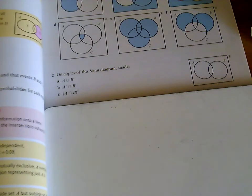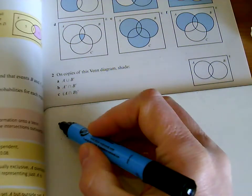Question 2 asks you to colour in some parts of the Venn diagram. So if we draw a little Venn diagram here.